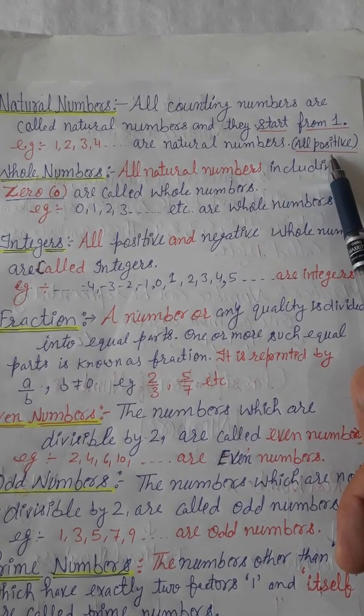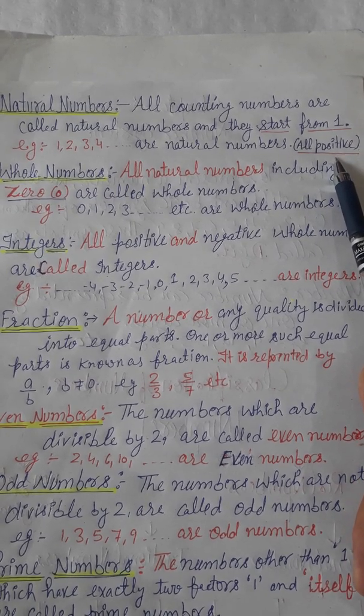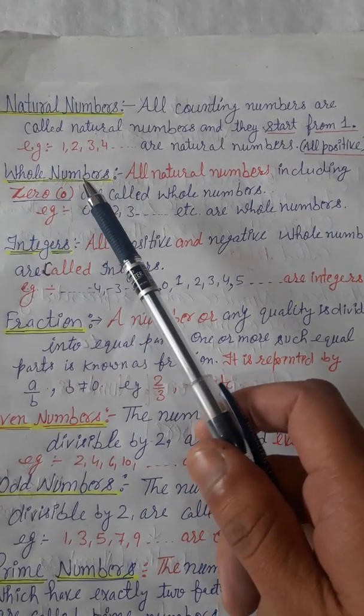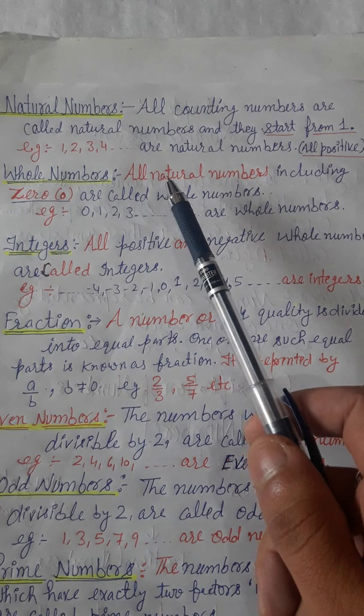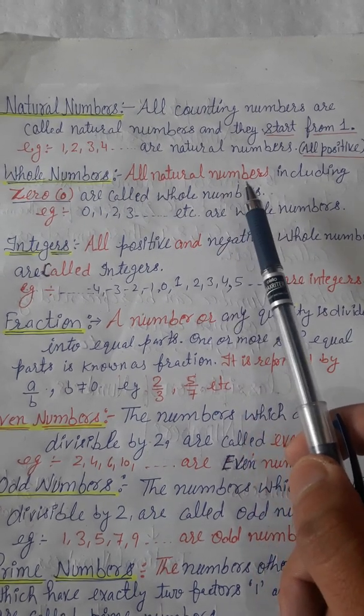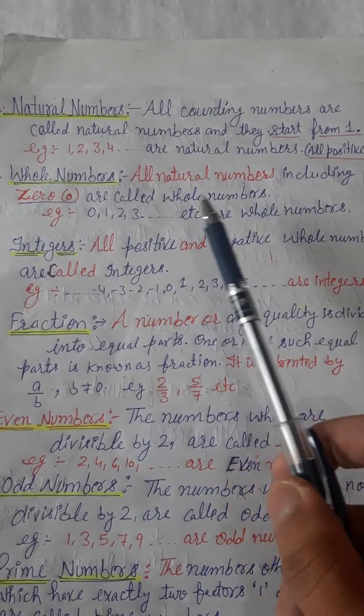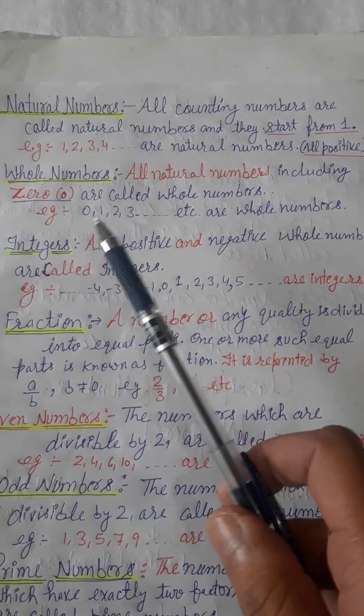Whole numbers: Whole numbers are all natural numbers including zero. Examples are 0, 1, 2, 3, 4, and so on. They are also all positive.